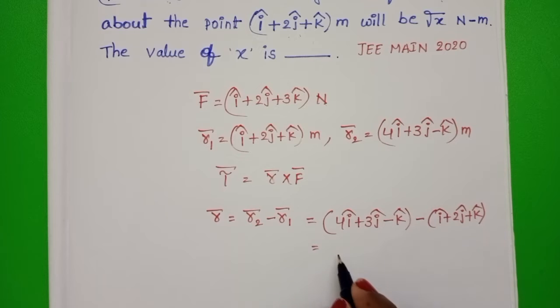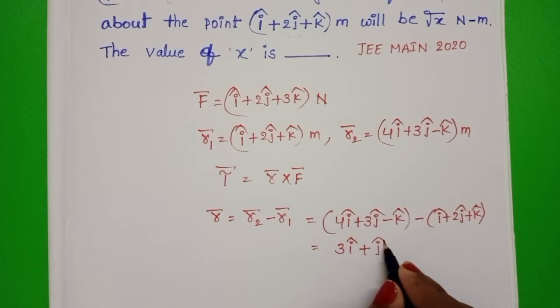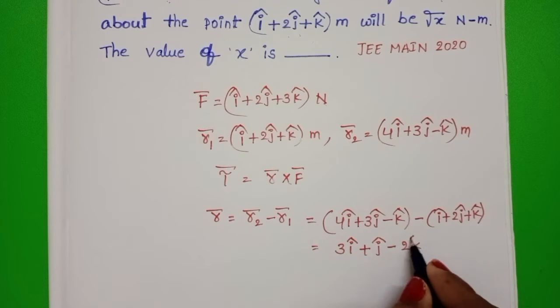4 i minus i, 3 minus 2, plus j, minus k minus k equals 3 i plus j minus 2 k.